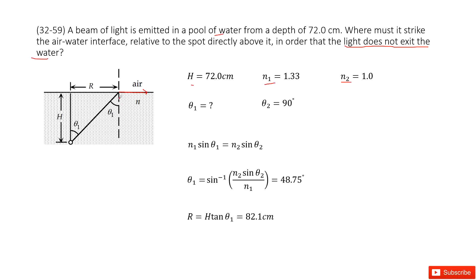So the light cannot exit the water this way, and this is called total internal reflection. So theta 1 is called the critical angle.